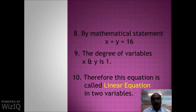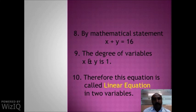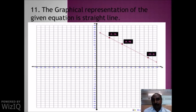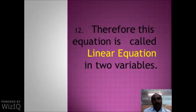Hence, x plus y is equal to 16. This equation is formed. Here, x plus y is the left-hand side and 16 is the right-hand side. The degree of these variables is 1 — the degree of x is 1 and the degree of y is 1. So this type of equation is called a linear equation in two variables. The teacher plots these points on graph paper, and the graphical representation of this equation is a straight line.